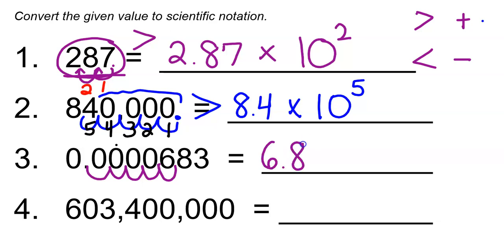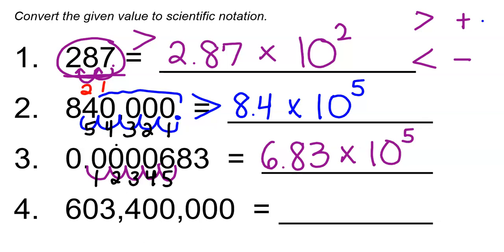So we have 6.83 times 10 to some exponent power. We count how many times we moved the decimal point: 1, 2, 3, 4, 5 times. So it's times 10 to the 5th power. Our original number, 0.0000683, is definitely smaller than 6.83, which means our exponent needs to be negative. So we make this a negative 5: 6.83 times 10 to the negative 5th.